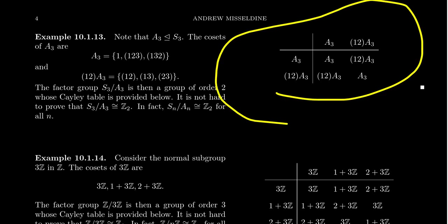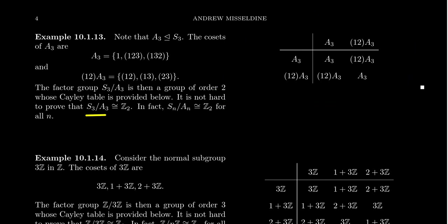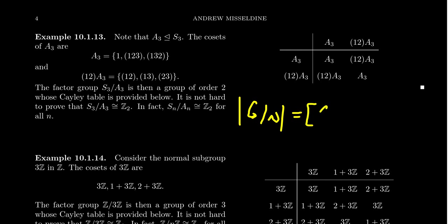When you look at this Cayley table, it looks a lot like the cyclic group mod 2. That's because S₃ mod A₃ is actually isomorphic to Z₂ — a cyclic group of order 2. In fact, this is something we see in more generality: if you take Sₙ and mod out Aₙ, you always end up with Z₂. One important thing to know about factor groups: the order of G/N is the number of cosets, which is the index of the normal subgroup. Since Aₙ has index two, this group will always be order two, and there's only one group of order two — Z₂.